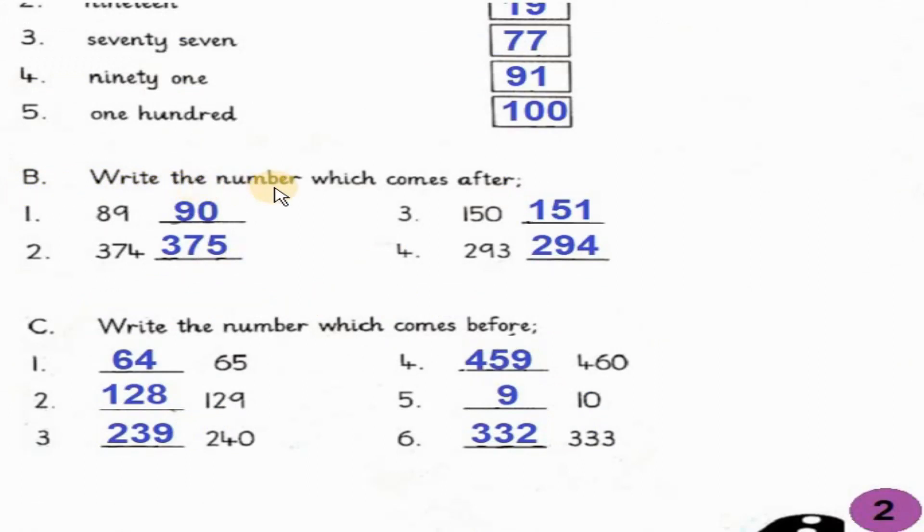Part B, write the number which comes after. What comes after 89? 90. So write 90 here. 89 के बाद क्या आता है? 90. आपने यहां 90 लिखना है. Number 2, 374. What comes after 374? 375. Number 3, 150. What comes after 150? 151. Number 4, 293. What comes after 293? 294.